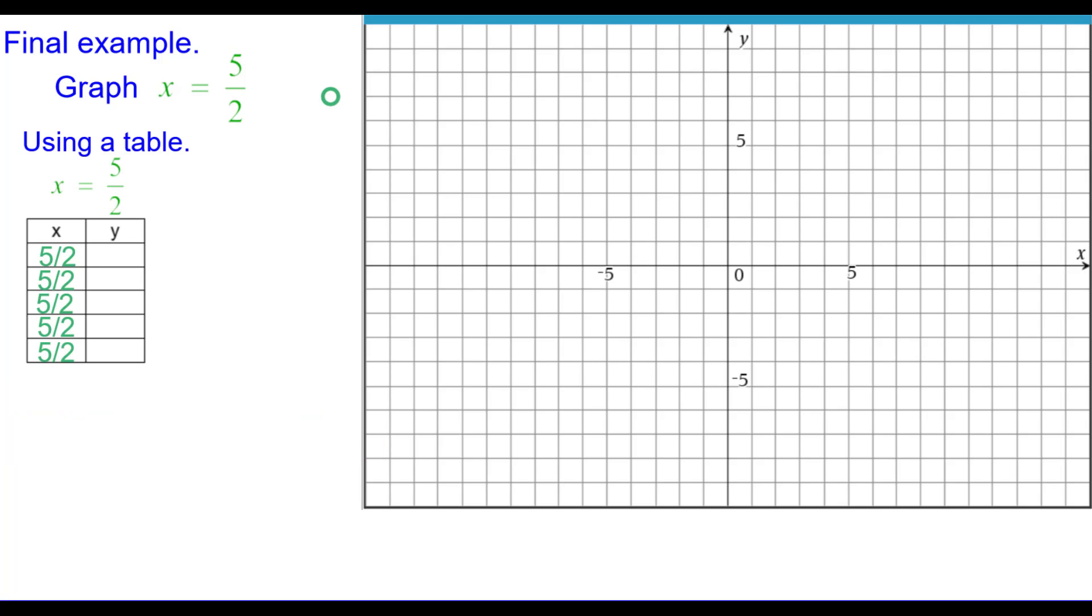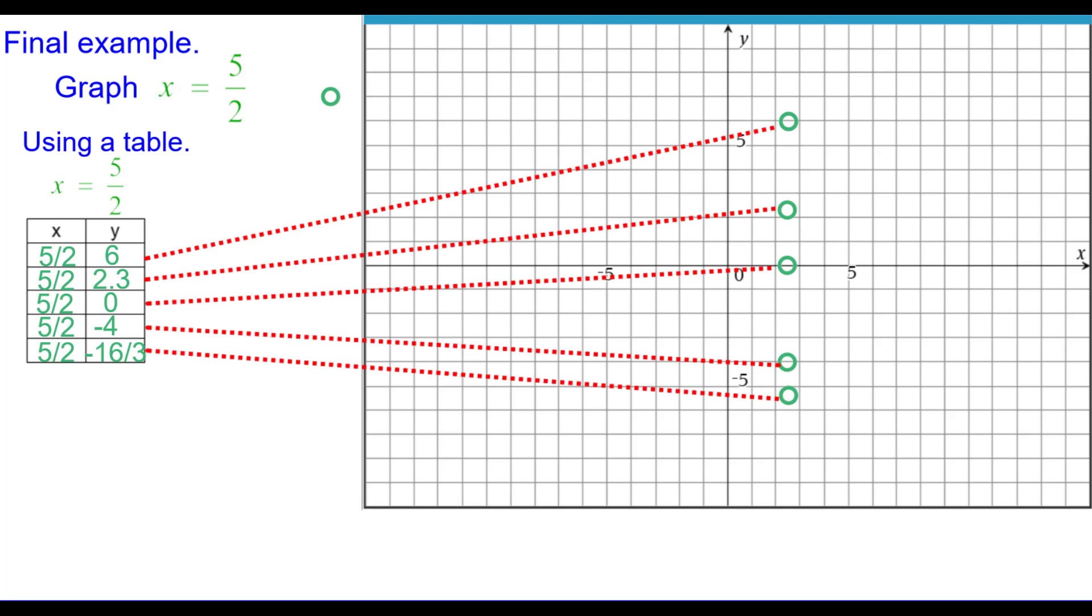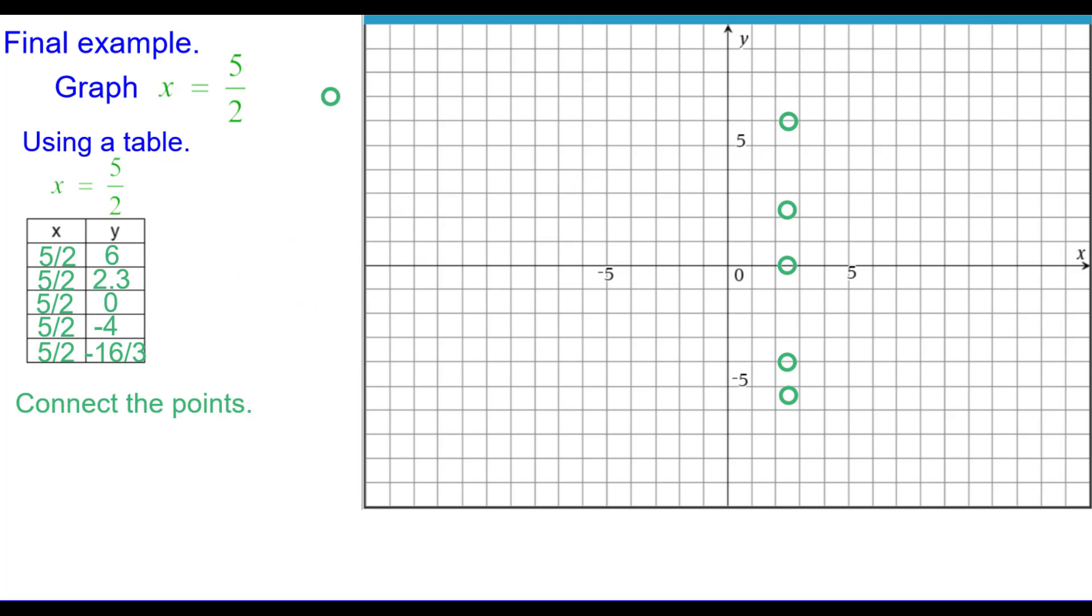So using a table, we put in 5 halves for the x-coordinate. And then we can put in any values that we want for the y-coordinate because it only says that x has to be 5 halves. So we chose these numbers. There are many different numbers you could have chosen. And so we'll plot them and connect the points.